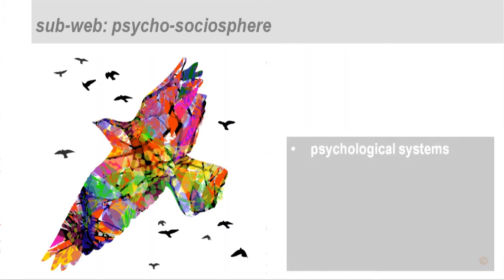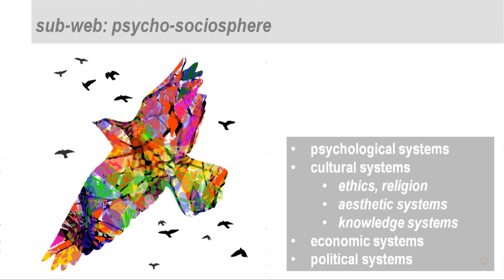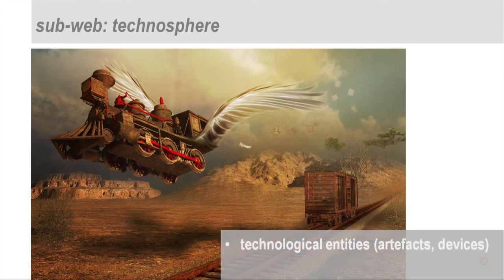The psychosocio-sphere includes psychological systems associated with emotions, cognition, and self-reference; cultural systems covering ethics, religion, and aesthetic systems like the arts; knowledge-related systems like science, media, and communication; economic systems concerned with production and exchange of goods and services; and political systems — how systems interrelate, make decisions, and manage themselves. In the technosphere, we talk about different classes of technological entities and different types of technological processes.